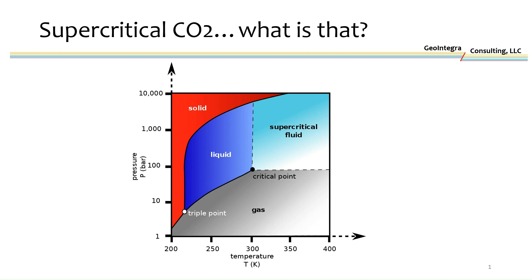Once you get past a certain temperature and pressure, you reach what's called the critical point, where a fourth fluid phase shows up. This is referred to as a supercritical fluid, which is interesting in that it contains properties similar to both a liquid and a gas. That's important when it comes to injecting CO2, which we'll discuss in the next slides.